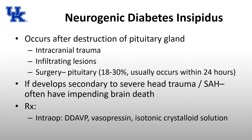If neurogenic diabetes insipidus develops secondary to severe head trauma or subarachnoid hemorrhage, these patients often have impending brain death and it's a poor prognostic factor. The treatment of neurogenic diabetes insipidus is to give them what they aren't making or secreting — desmopressin or DDAVP, which is an analog of vasopressin, and vasopressin itself. Because they've lost a lot of volume, give them an isotonic crystalloid solution. If blood pressure is a problem, vasopressin makes sense; if hemodynamically stable, DDAVP is appropriate, though giving DDAVP too quickly can cause some hypotension.